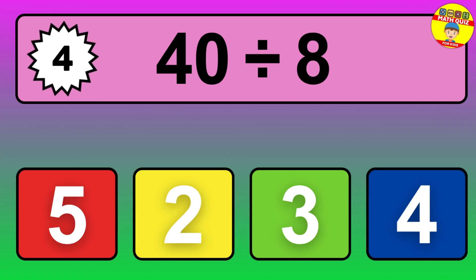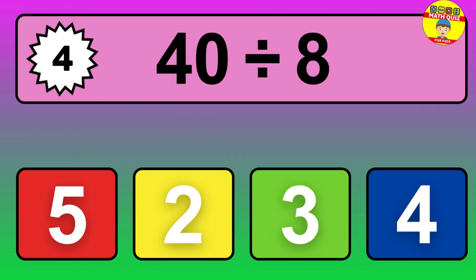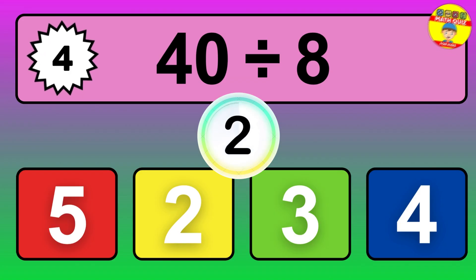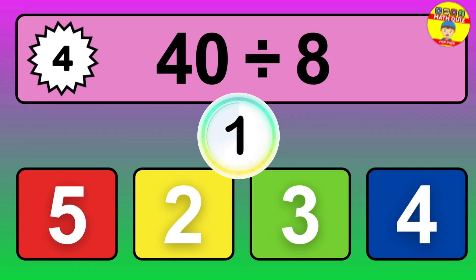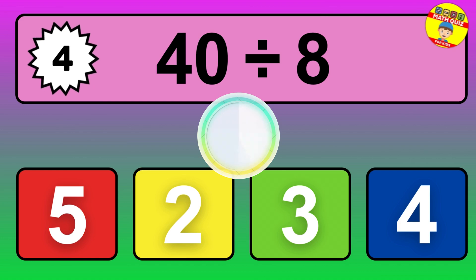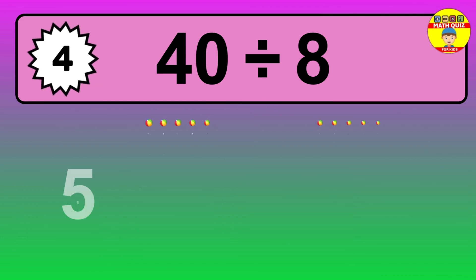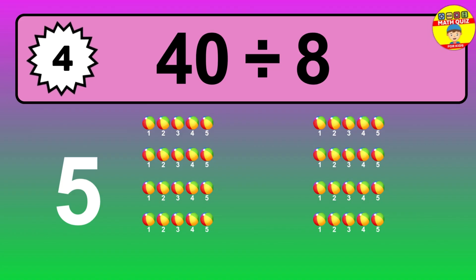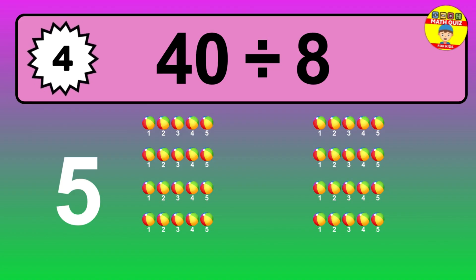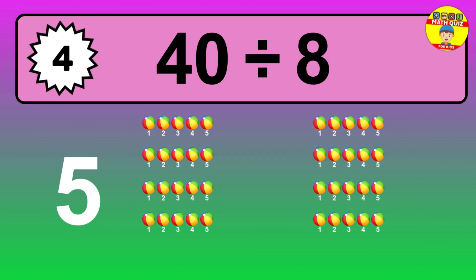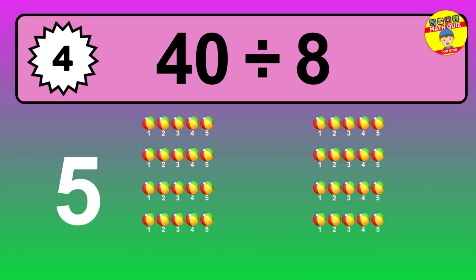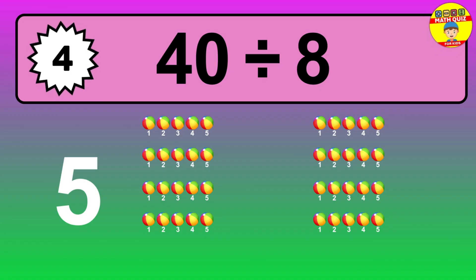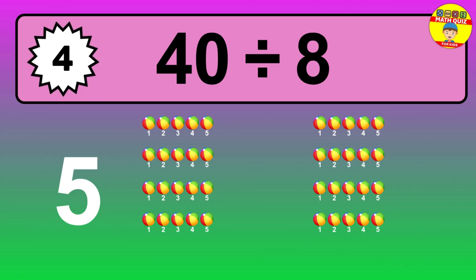40 divided by 8 — time to think. Let's go to the solution. Divide the number 40 by 8. Each group contains 8 units, so dividing 40 by 8 results in 5 equal groups. Thus, the result is 40 divided by 8 equals 5.